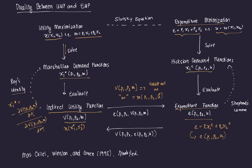Similarly, you can recover the Hicksian demand functions using Shephard's Lemma. Shephard's Lemma states that a Hicksian demand function is the partial derivative of the expenditure function with respect to the price of its own good. So x1c is derived with respect to p1, and x2c is derived with respect to p2. This gives two ways of solving: if given the expenditure minimization problem, solve directly for the Hicksian; if given the expenditure function, use Shephard's Lemma to recover the Hicksian.